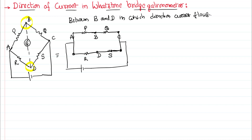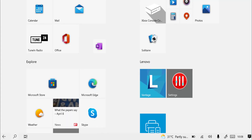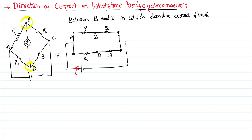I assume the bridge is in a balanced state for now and I will tell you how the current distribution happens. From the positive plate of the battery, current I starts. After reaching the junction, current gets distributed as I₁ and I₂. I₁ continues further through Q, and I₂ continues further through S. At the next junction, both of them join, become I again, and come back to the negative plate of the battery.